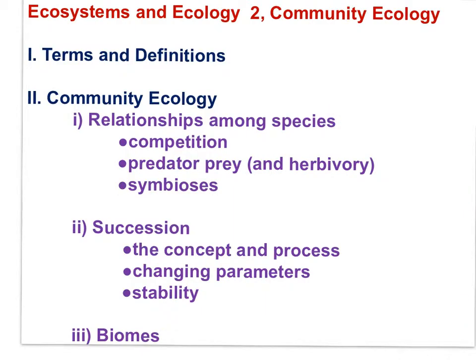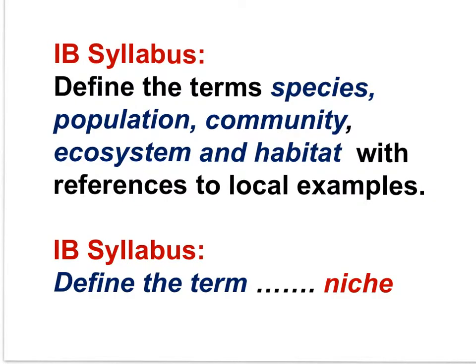In Ecosystems and Ecology 2, Part 2, the focus is on community ecology. I've just run through some terms and definitions, and now we're on to the interactions — the relationships among species. The rest of this movie will focus on competition. To do that, I will need to introduce the term and concept of the niche. Here's an IB syllabus statement with the expectation that you be able to define the terms species, population, community, ecosystem, and habitat, with reference to local examples. As well, you need to be able to define the term niche.